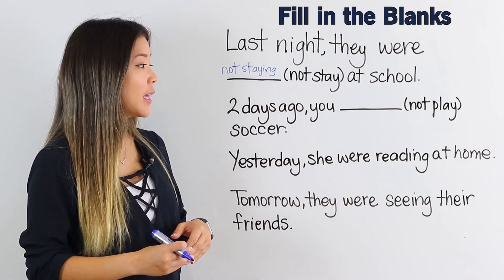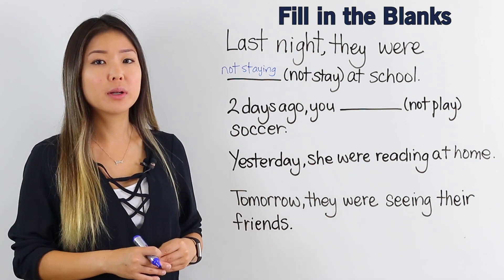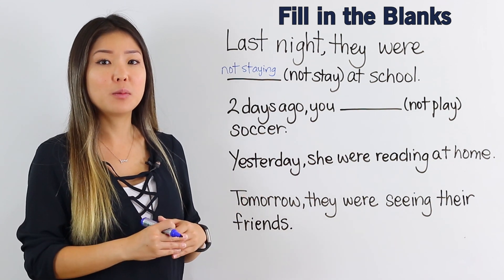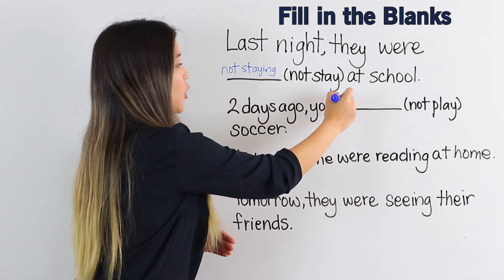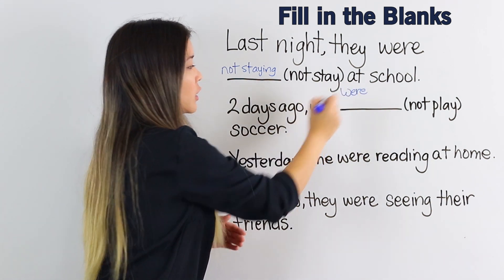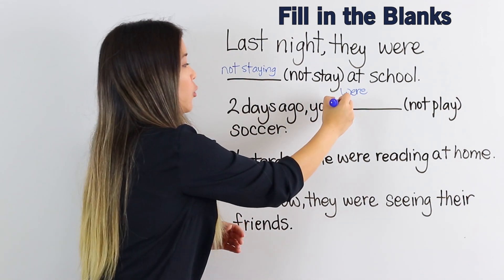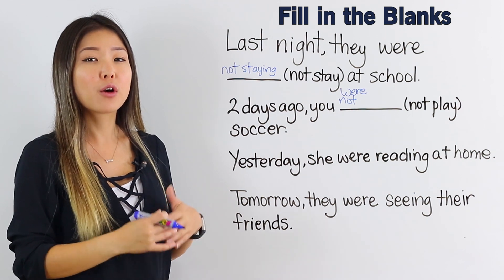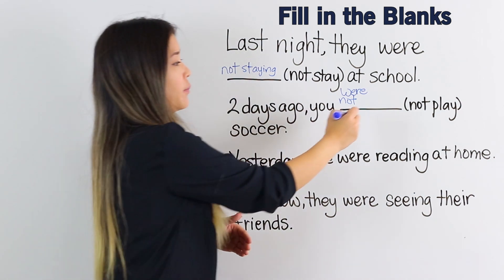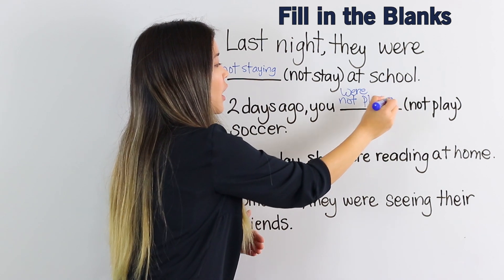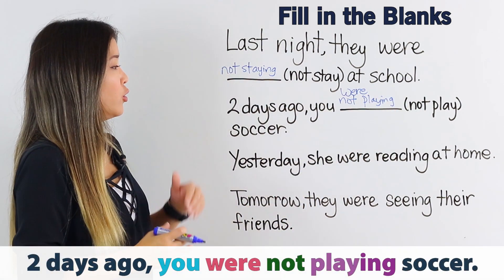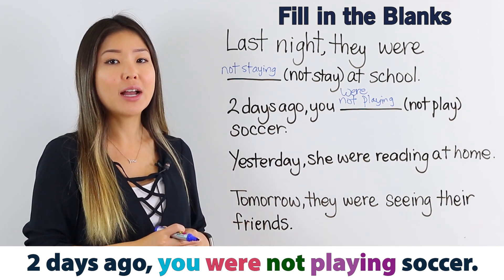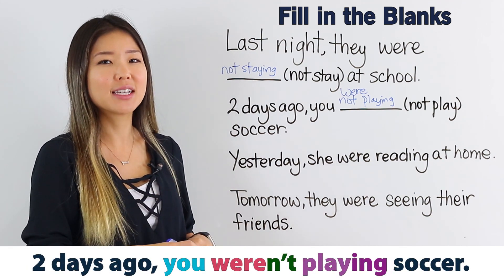In this case, the first thing that's missing is the be verb. If the subject is you, the correct answer is were. Then we say not. Remember, verb –ing. So, you were not playing. Two days ago, you were not playing soccer. You can also use a contraction and say, you weren't playing soccer.